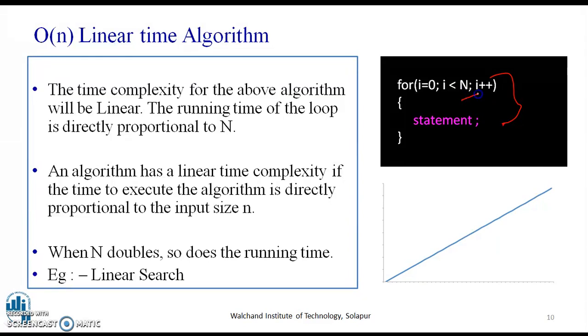Linear growth rate is growth rate where the resource needs and amount of data is directly proportional to the data. That is, the growth rate can be described as a straight line. It is not horizontal as we have seen in O(1). An algorithm has a linear time complexity if the time to execute the algorithm is directly proportional to n. Example, the linear search.